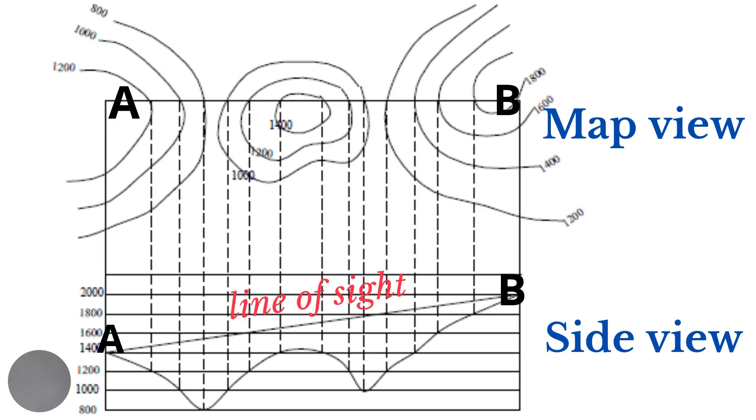So, besides helping us to view the shape of the land, cross sections are also useful in helping us to determine inter-visibility between two places.